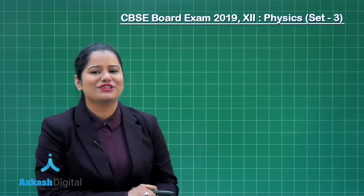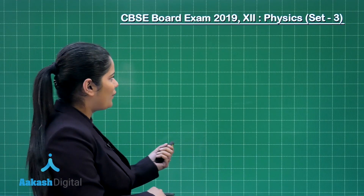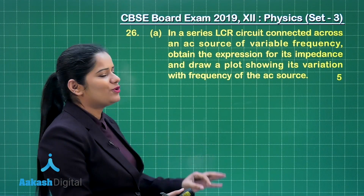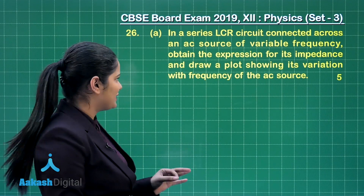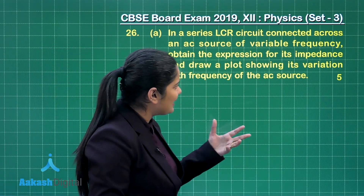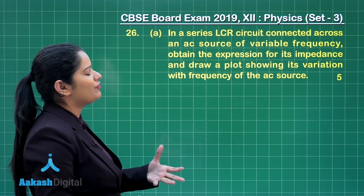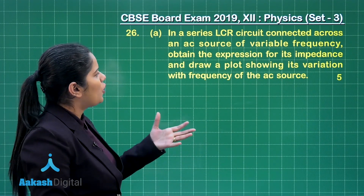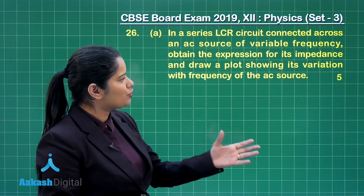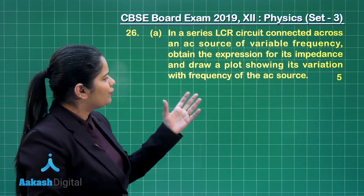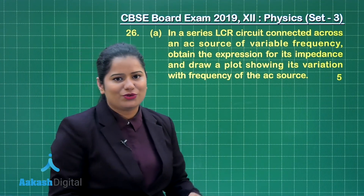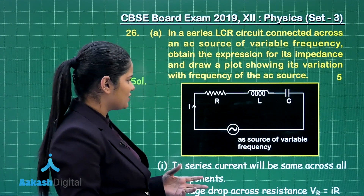Now it's our turn to take up the solution for question number 26. The first part of the first choice of question number 26 says: in a series LCR circuit connected across an AC source of variable frequency, obtain the expression for its impedance and draw a plot showing its variation with frequency of the AC source. Let's have a look at the solution for this part.